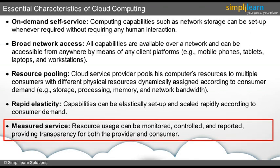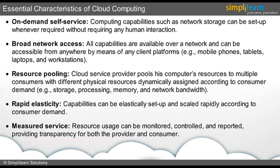Measured service is the last one in the list. When a passenger travels by train, he or she only pays for the amount of distance traveled and not for the entirety of the journey. Likewise, resource usage is monitored by the provider and charged only for what has been utilized by the consumer. This is the typical pay-per-use or charge-per-use method that is used. In the next slide, we will discuss the different service models of cloud computing.